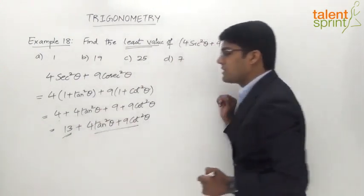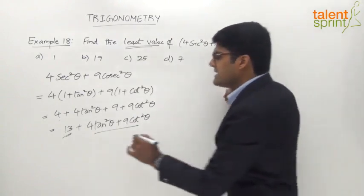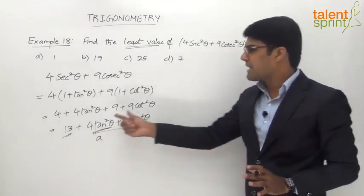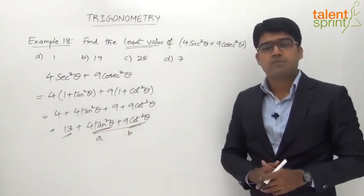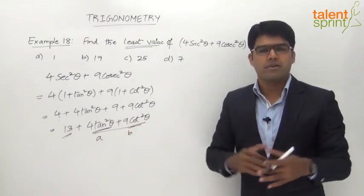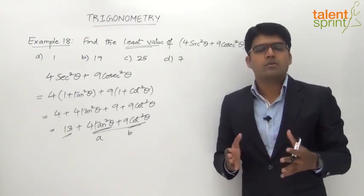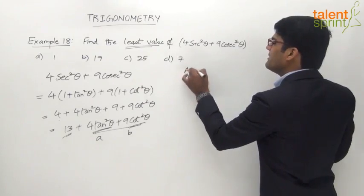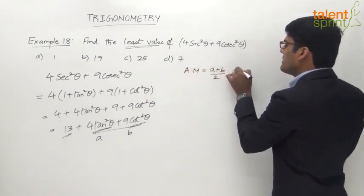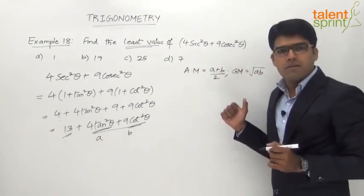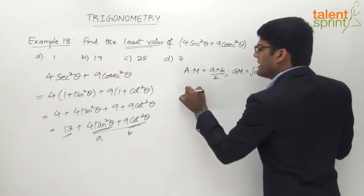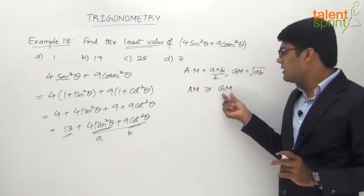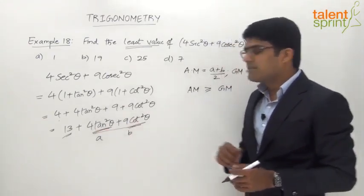Since 13 is a constant, we focus on the remaining two terms: 4tan²θ and 9cot²θ. Let us consider 4tan²θ as a and 9cot²θ as b. From the basics of progressions, we know that the arithmetic mean of two values is always greater than or equal to the geometric mean. For two values a and b, the arithmetic mean is (a+b)/2 and the geometric mean is √(ab).